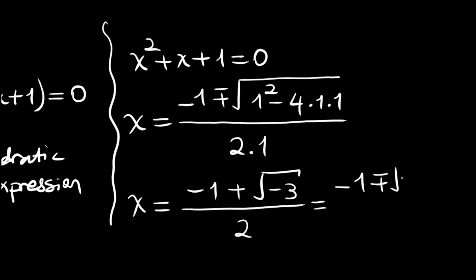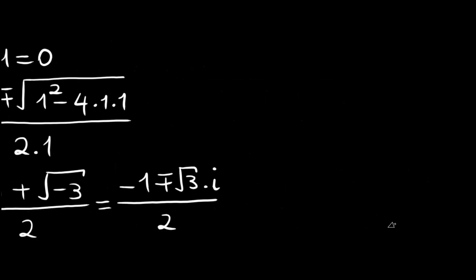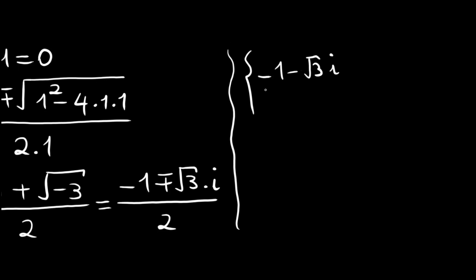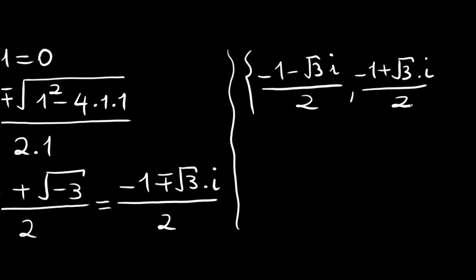This can also be written as minus one plus or minus root three times i, the complex unit, divided by two. So our full set of solutions is: minus one minus root three times i divided by two, minus one plus root three times i divided by two, and the real root one.